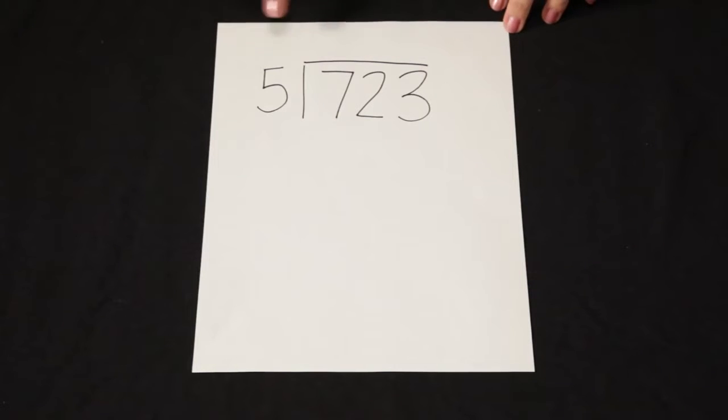We can use the traditional algorithm to divide 723 by 5. First I ask myself, how many groups of 5 can I make with 7? I can make one group of 5.